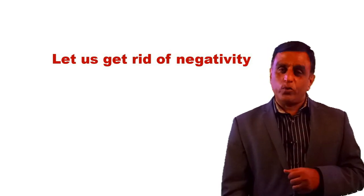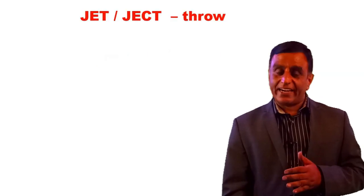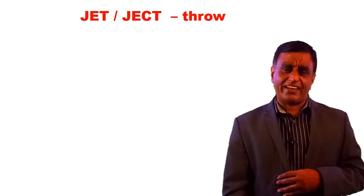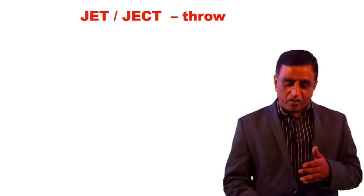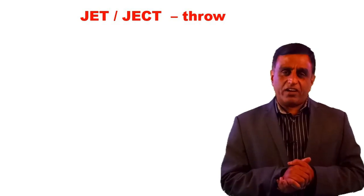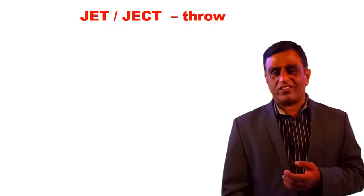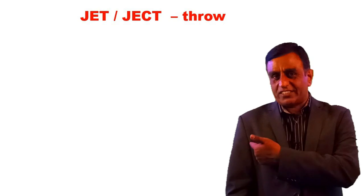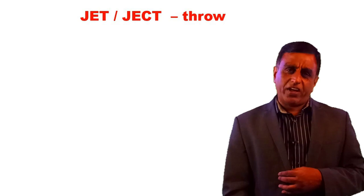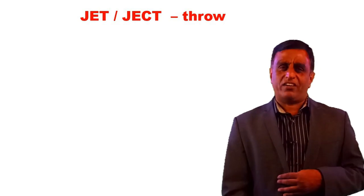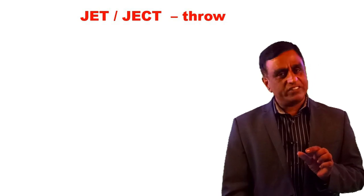Let us look at a particular root word which has something to do with the word 'negative,' or how we get rid of things. J-E-C-T, or J-E-T, is a root word which means 'throw.' You have seen injections being given during COVID. Now start thinking — pause this video for a second and think of some words which have J-E-T or J-E-C-T in them.